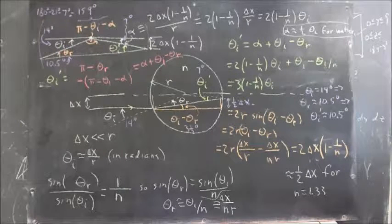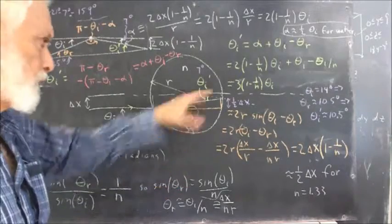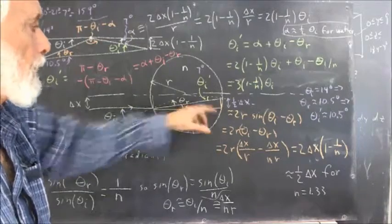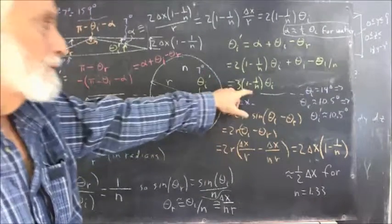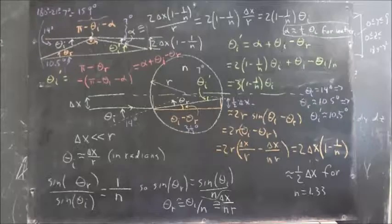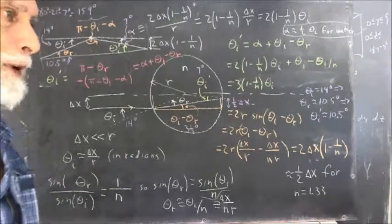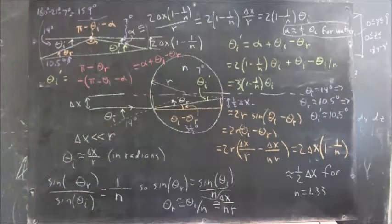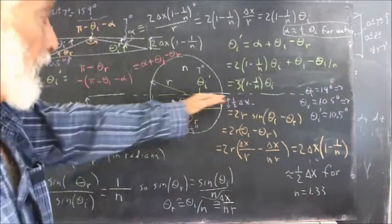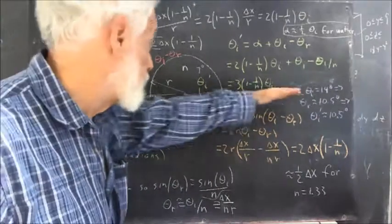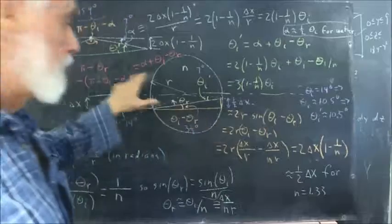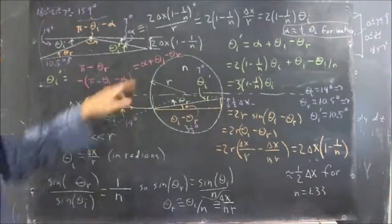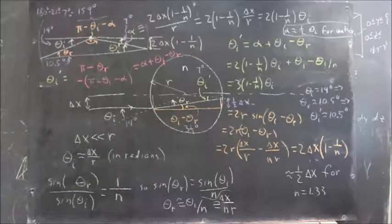If n gets big enough — more than about 1 and 2/3 or maybe 2 — this ray is going to refract to the other side of the axis, so we'd need to think about what that means. But for reasonable indices of refraction of most materials, this works just fine. That gives us our angle of incidence on the back of the lens. Now we have to do another refraction from index of refraction n out to index of refraction 1, assuming air on the outside and some other material on the inside.